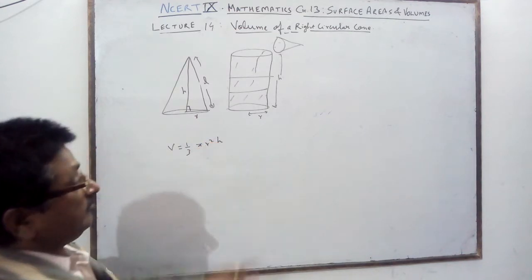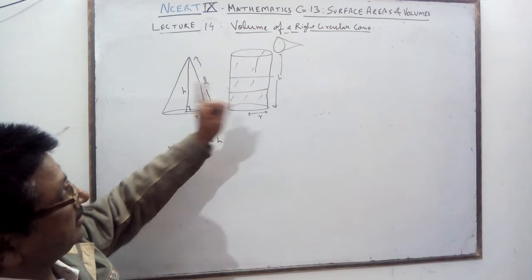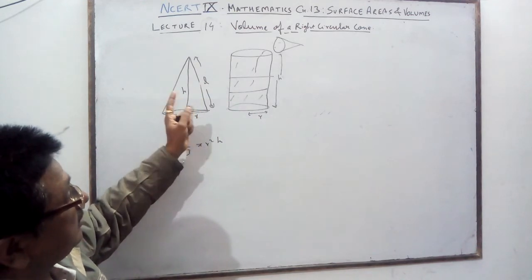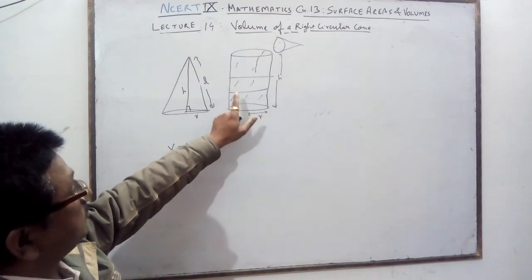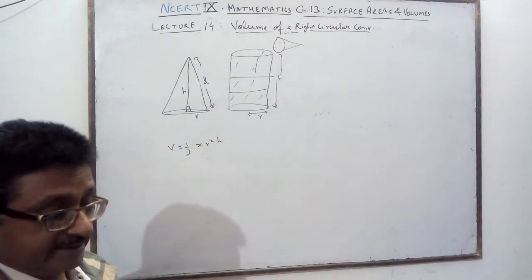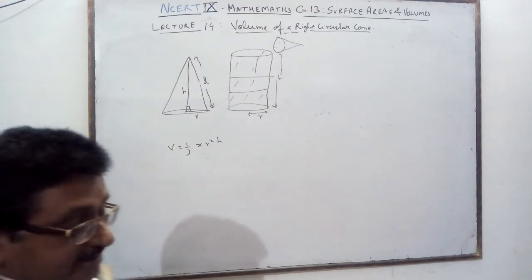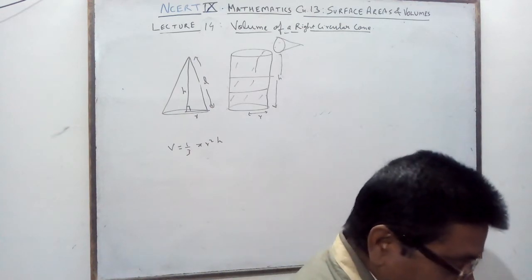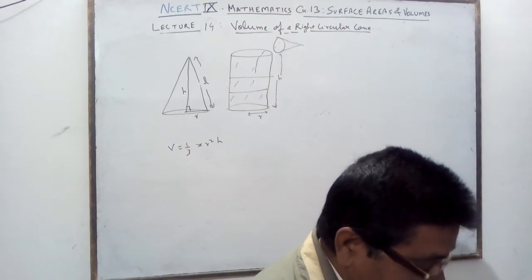So for the same radius and same height, the volume of the cone is equal to one third of the volume of the cylinder. This is a very common result and the experiment is given in the book.